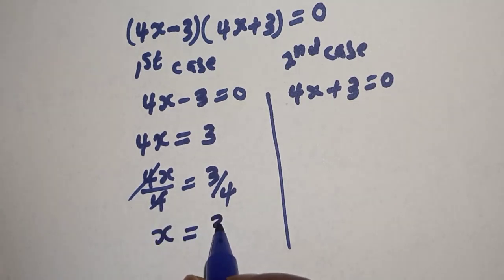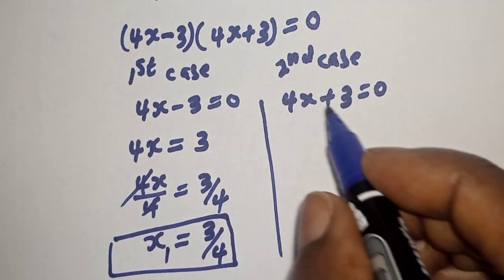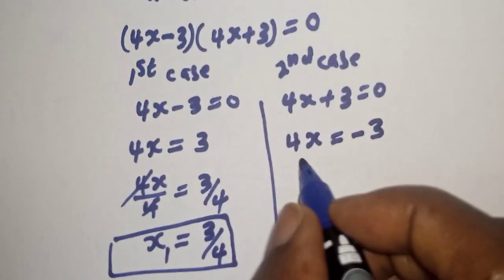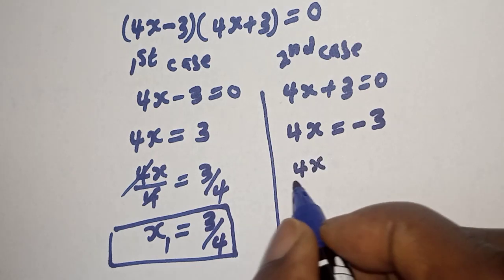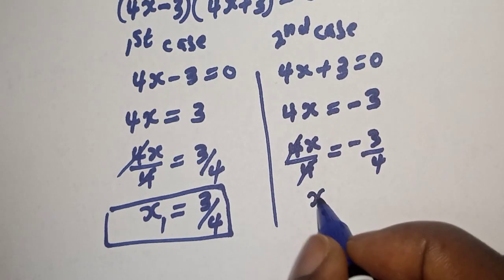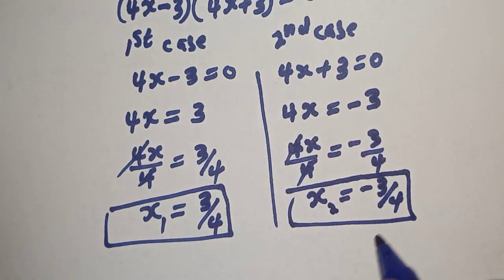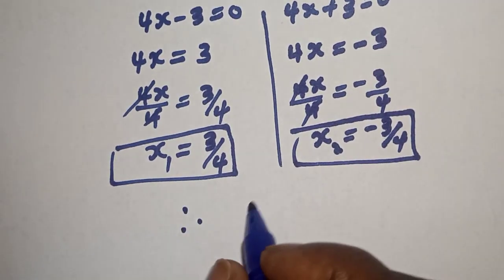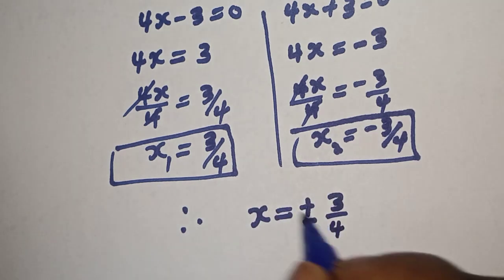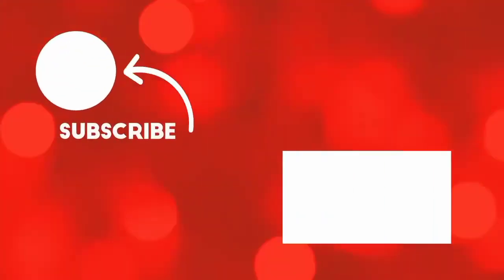s = 3/4. This is called s₁. From the second case, 4s = -3, divide both sides by 4, we cancel the 4s, so s = -3/4. This is s₂. Therefore our final answer: s = ±3/4. Before you leave, like, share, comment and subscribe. Thank you, bye bye.